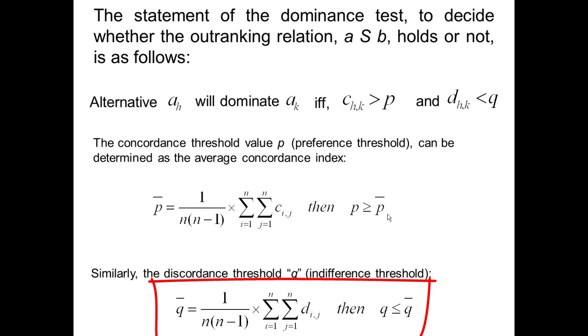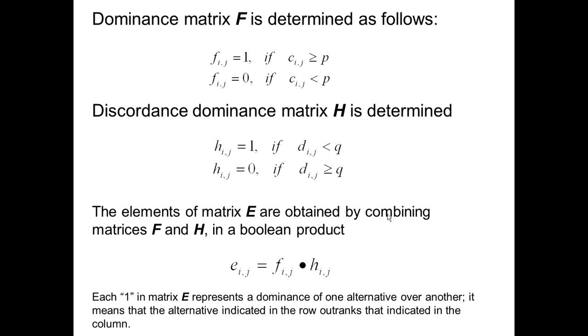The next step is the determination of the aggregate matrix, a dominance matrix, capital E, also known as the outranking matrix, which is formed taking into account the outranking test upon the concordance matrix and the discordance matrix. It is done as follows: First, dominance matrix F is determined using the concordance index. Then the discordance dominance matrix H is determined. Finally, the elements of matrix E are obtained by combining matrices F and H in a boolean product. Each one in matrix E represents the dominance of one alternative over another. It means that the alternative indicated in the row outranks that indicated in the column. And this concludes the exploitation stage.